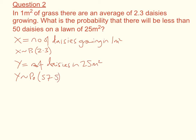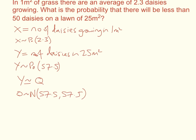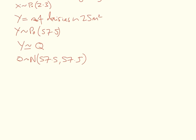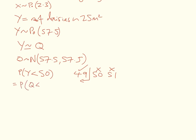Now we need to approximate from Poisson to normal. We say that y is approximately the same as another random variable q, where q has a normal distribution of mean 57.5 and variance 57.5. We need to find the probability that there will be fewer than 50 daisies, so we're finding P(y < 50). Applying the continuity correction around 50: we don't want 50 or 51, we want 49 and below, so that's the same as P(q < 49.5).